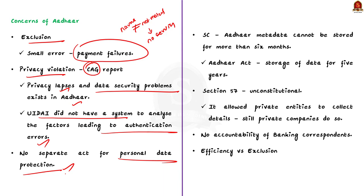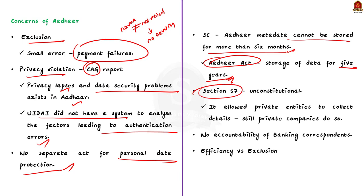The third issue is that the Supreme Court ruled that Aadhaar metadata cannot be stored for more than six months, but the Aadhaar Act allowed storage of data for a period of five years. This Aadhaar metadata is prone to cyber attack and can lead to profiling of individuals. The fourth concern is that even though the Supreme Court struck down Section 57 of the Aadhaar Act — which allowed private entities to collect citizens' Aadhaar details — it is not correctly enforced, and there is increasing incidence of private companies demanding Aadhaar for their databases.